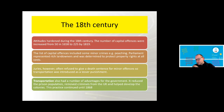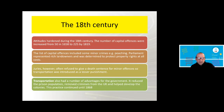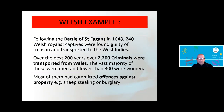In the 18th century, attitudes hardened further — capital offences actually increased, including minor crimes like poaching. Parliament was dominated by rich landowners wanting to protect property. At the same time, jurors refused to convict because they knew the crime would lead to a death sentence even for what they saw as minor offences. Transportation created a number of advantages, reducing the prison population and moving criminals from the UK. Around 2,200 criminals were transported from Wales, often for low-level activity like sheep stealing.